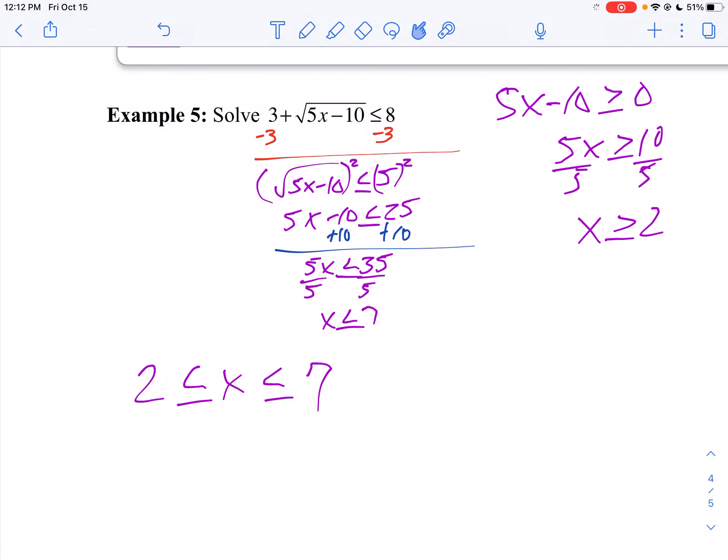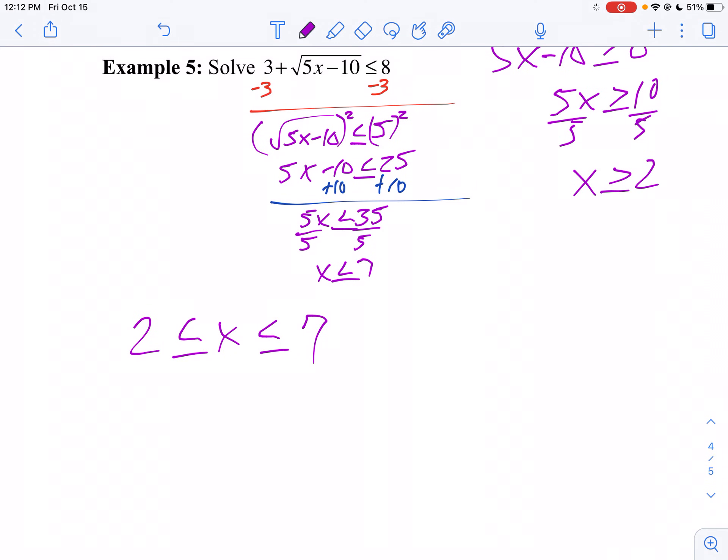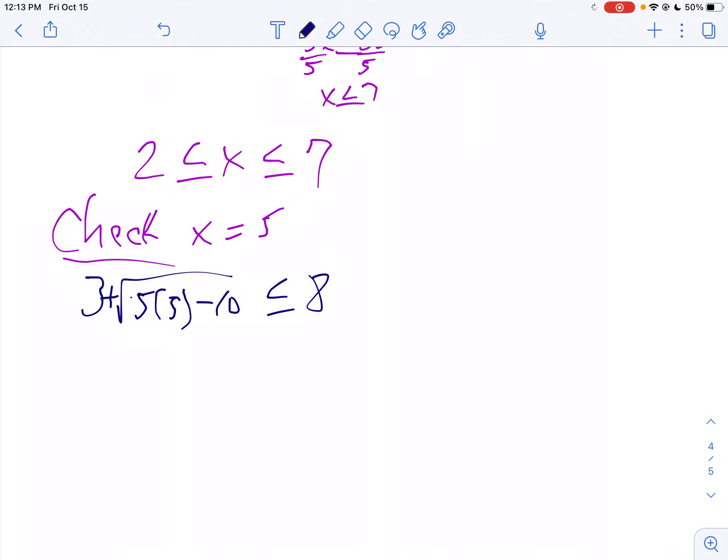Now let's check our work. Let's pick a number between 2 and 7. I like 5. So is 3 plus the square root of 5 times 5 minus 10 less than or equal to 8? Well, 5 times 5 is 25, so 25 minus 10 is 15. So I got 3 plus the square root of 15 is less than or equal to 8.